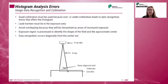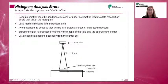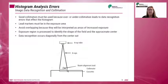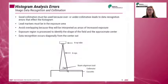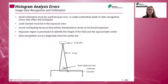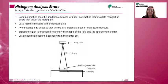When these guidelines are not followed, clinically relevant information may not be included in the displayed images. Histogram analysis errors are more prevalent in CR than in DR because in CR the entire plate is scanned and the histogram is generated from exposure field recognition, while in DR only the exposed pixels are included in the data set.